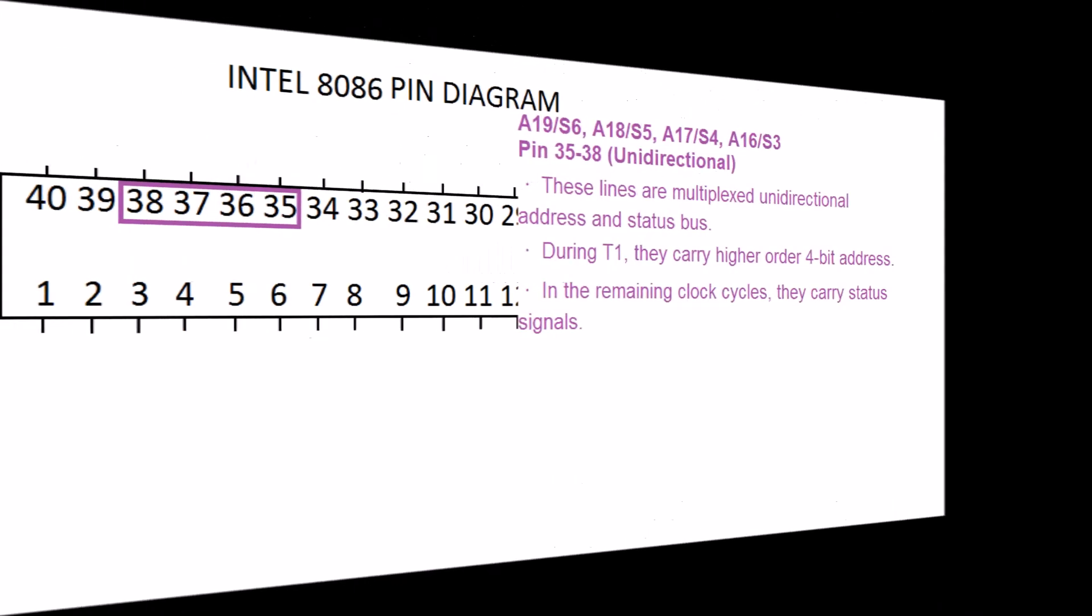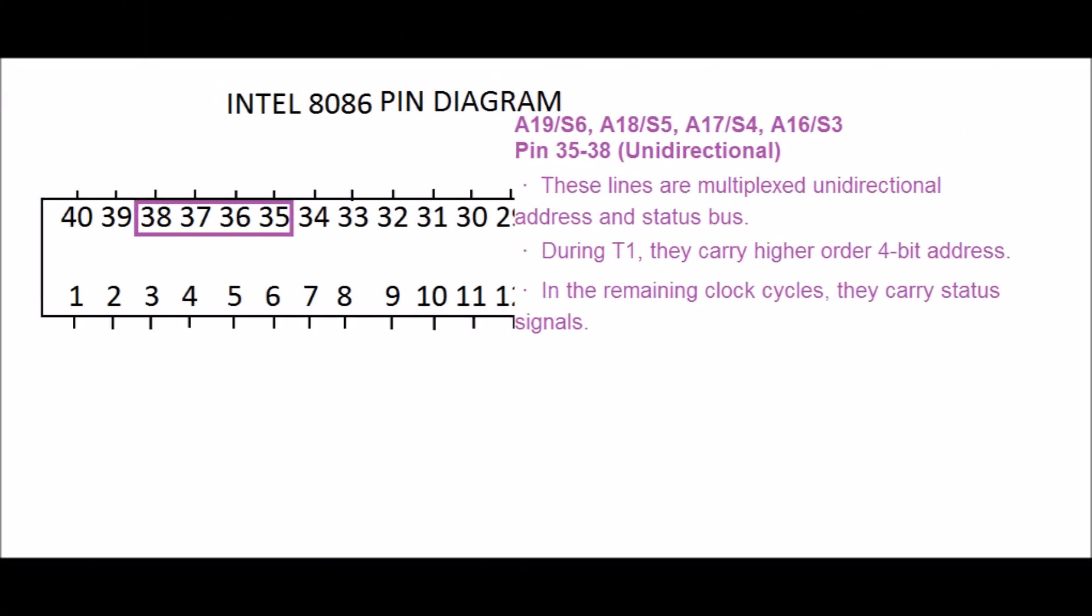A19/S6, A18/S5, A17/S4, A16/S3. PIN 35 to 38, unidirectional. These lines are multiplexed unidirectional address and status bus. During T1, they carry higher order 4-bit address. In the remaining clock cycles, they carry status signals.